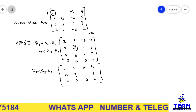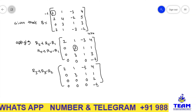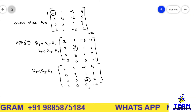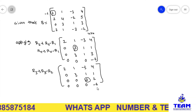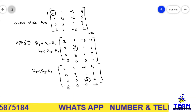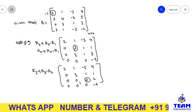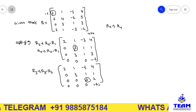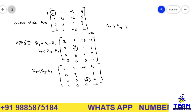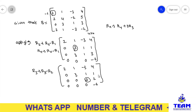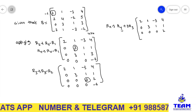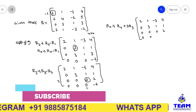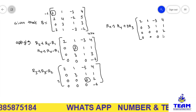The fourth row stays as 0, 0, 0, −6. Now observe: the third row is 0, 0, 0, 2 and the fourth row is 0, 0, 0, −6 — these are not identical but we need to make the fourth row a zero row. Apply R4 → R4 + 3R3: 0 plus 0 is 0, 0 plus 0 is 0, 0 plus 0 is 0, −6 plus 6 is 0.